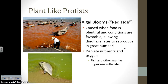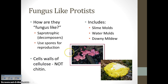The red tide is caused by dinoflagellates that have red pigments. Last up are fungus-like protists. What makes them fungus-like is that they are decomposers — saprotrophic, just like fungi. They also use spores for reproduction, which fungi do as well. But they have cell walls made of cellulose, not chitin like fungi. This includes slime molds, water molds, and downy mildew. Sometimes in streams in Georgia you see foamy orange-yellow stuff — those are actually slime molds.